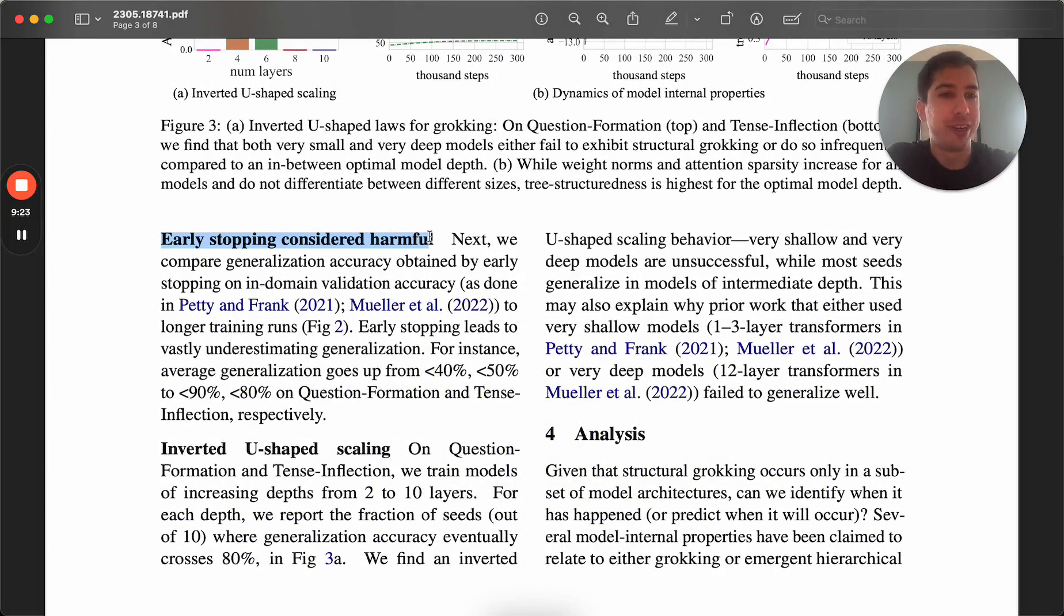They follow the traditional pattern of considered harmful here and say early stopping is considered harmful. Who knows how many tasks grokking applies to? And if we always stop when validation tells us to, we might not be generalizing as well as we could. This is particularly interesting to me with works like the Tiny Llama model that was released just in December.